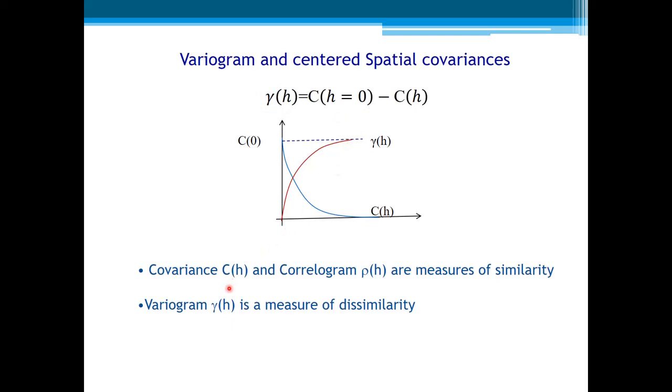Let us know that the covariance and the correlogram are measures of similarity, decreasing functions, which means that they decrease as h increases. The variogram, on the other hand, is a measure of dissimilarity. The lower is the variogram, the highest is the correlation between any pair of values separated by h.